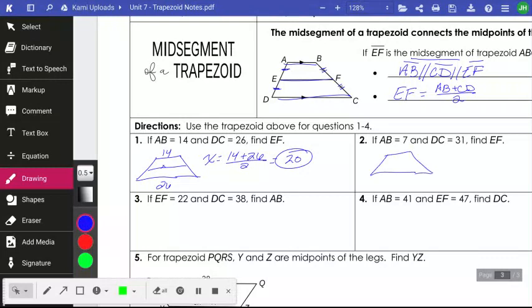Okay, if I do the same thing over here, AB is 7, DC is 31, and I'm trying to find EF. So X is going to be equal to the average of 7 and 31. 7 and 31 is 38, and 38 divided by 2 is 19.